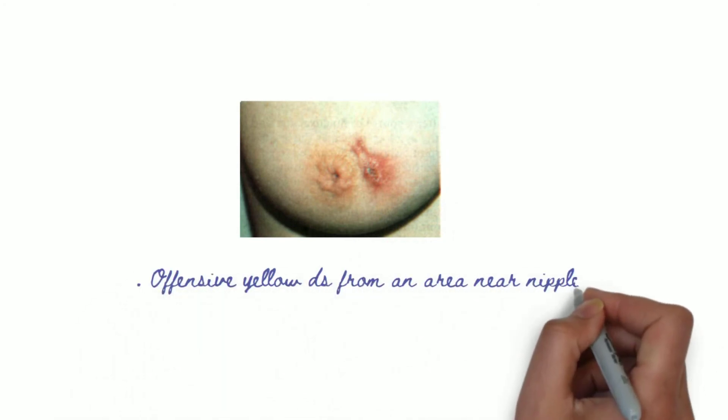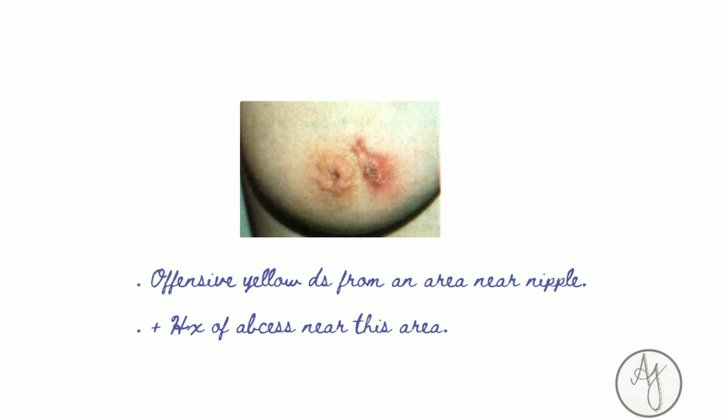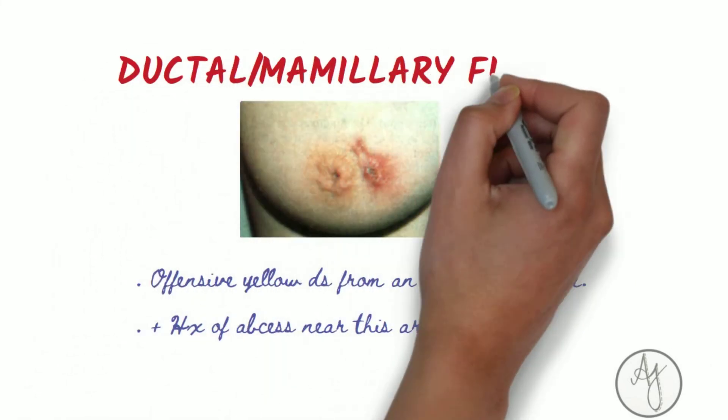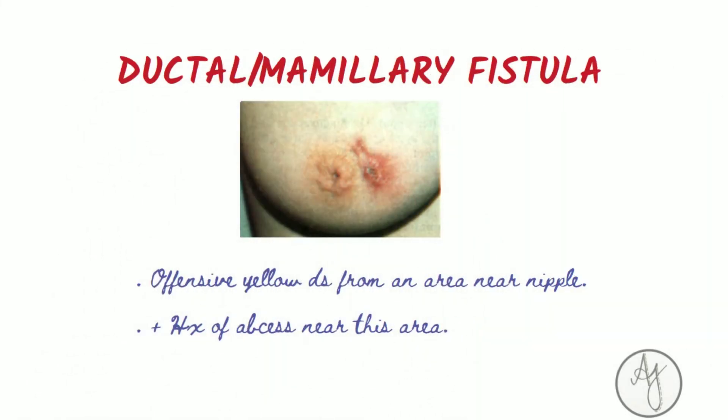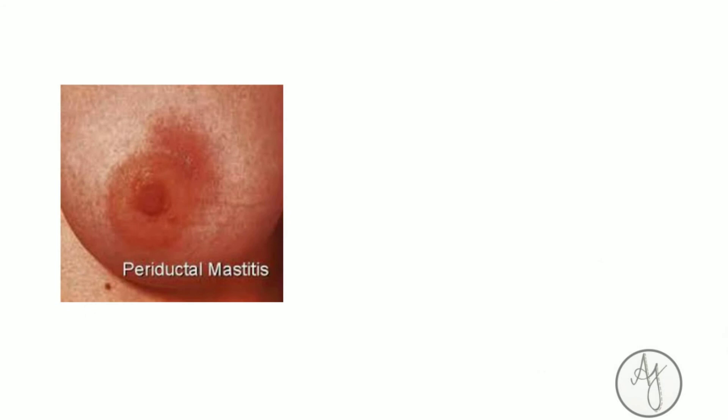If there is offensive yellow discharge from an area near the nipple with a history of abscess near this area, that is probably a ductal fistula or a mammillary fistula.